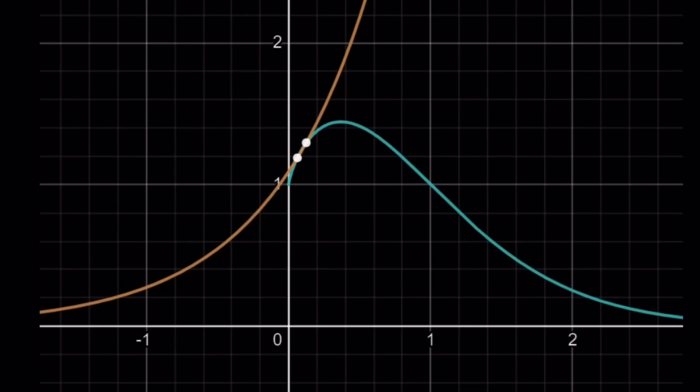And notice that the blue graph, is that green or blue? I think it's blue. The blue graph starts at zero. So it's only defined for positive numbers.